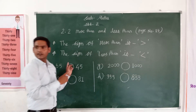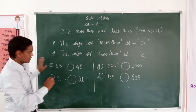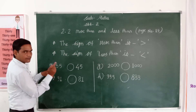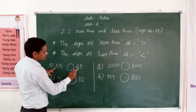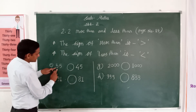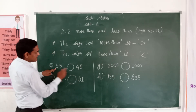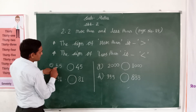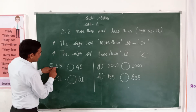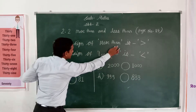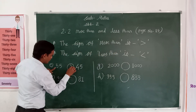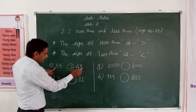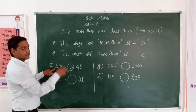Look here, continuing. The first number is 55 and the second number is 45. The first number is greater than the second number and the second number is less. Greater means more than. So 55 is more than 45.